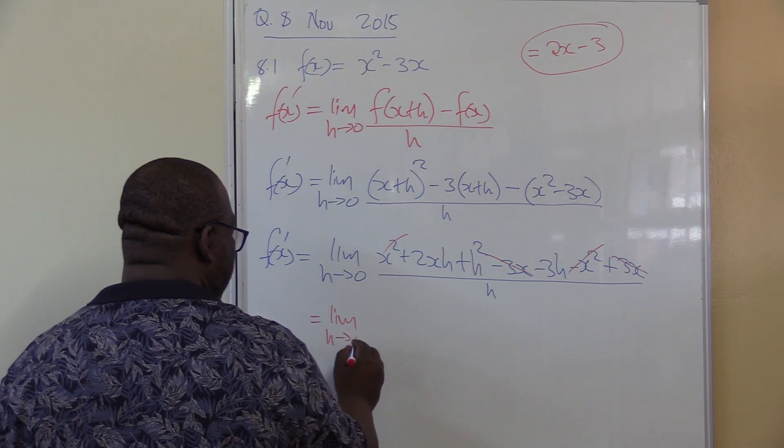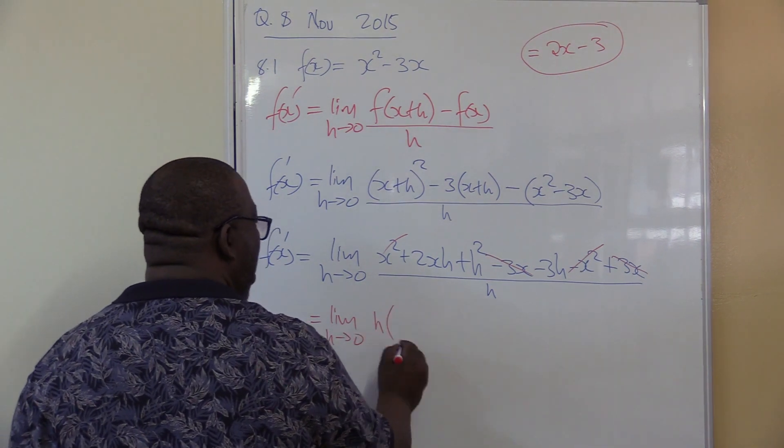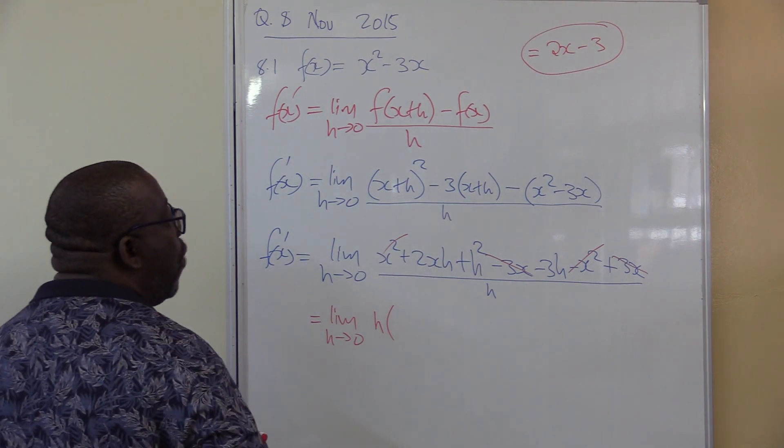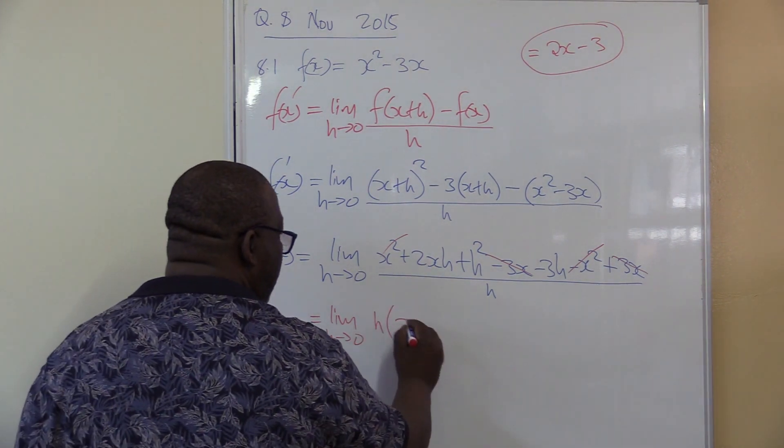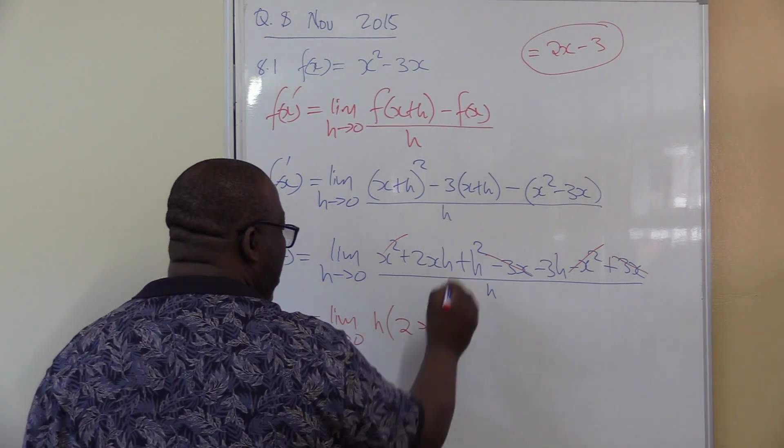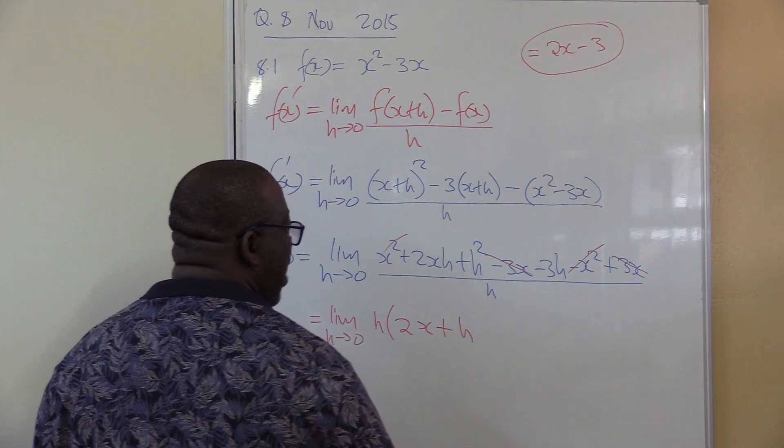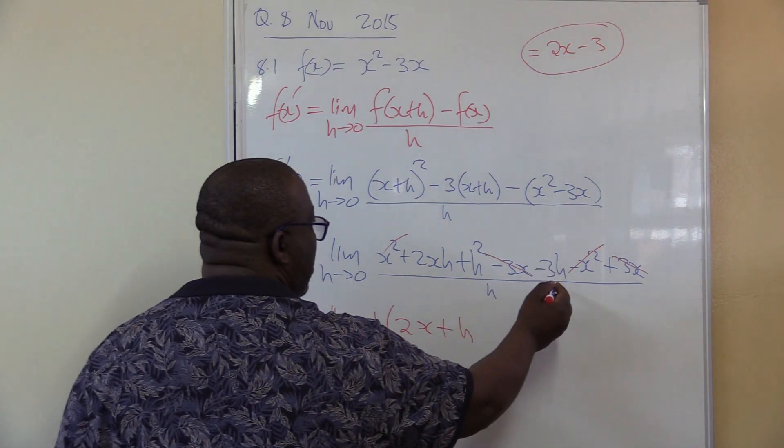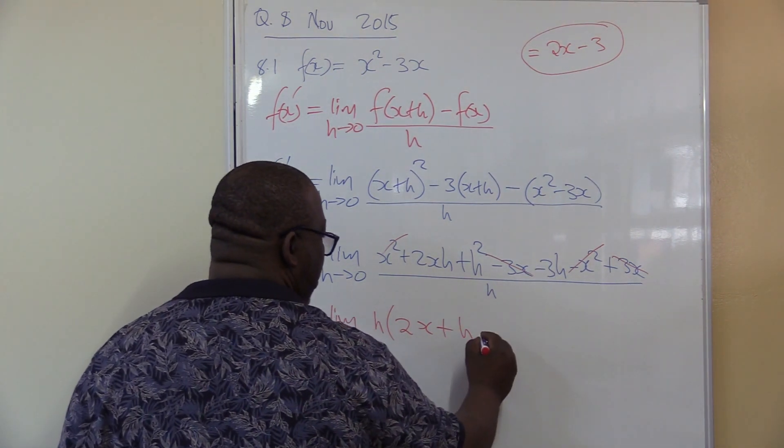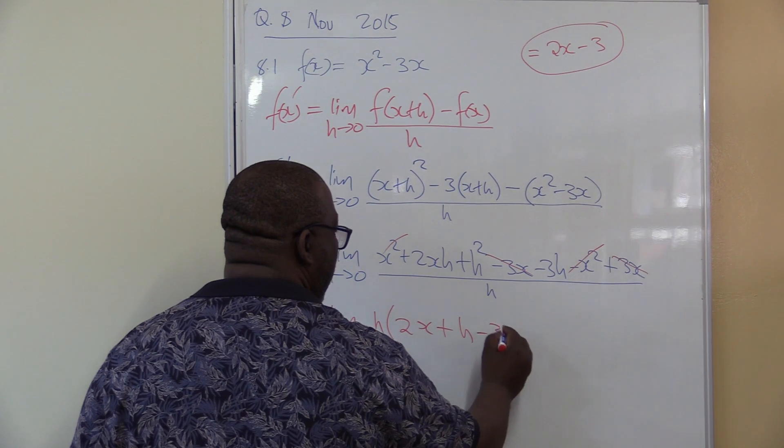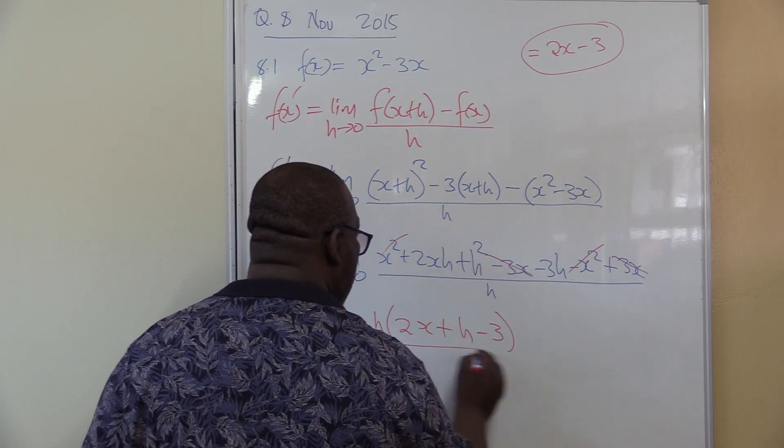The limit as h approaches zero. If I take h out in the first one, what are we going to be left with? With 2x. If I take h there in the second one, divide this by h, it will be left with h. This next one, you'll divide this by h, it will be left with minus 3. This is all over h.